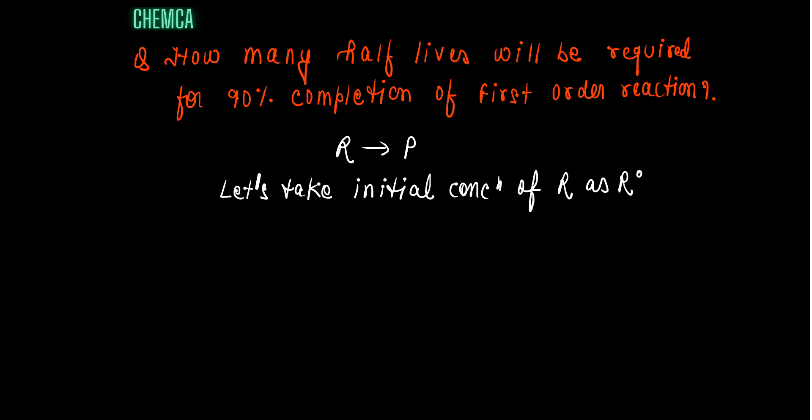Initial amount of R is R0. Now, after 90% completion of reaction, the remaining amount of concentration R will be equal to 0.1 times R0.